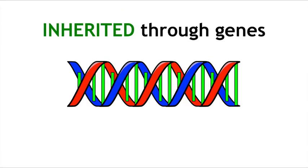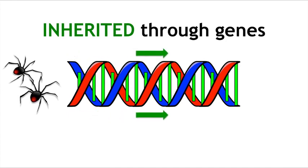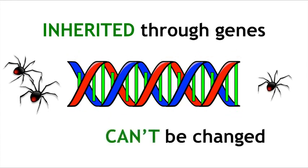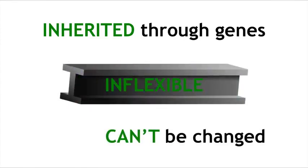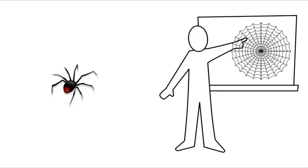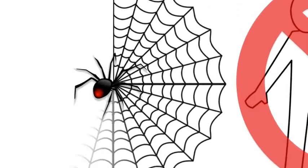Innate behaviour is thought to be inherited through genes and it can't be changed by the individual. It is inflexible. It can be very complex and it does not have to be learned. It will be fully developed from birth.